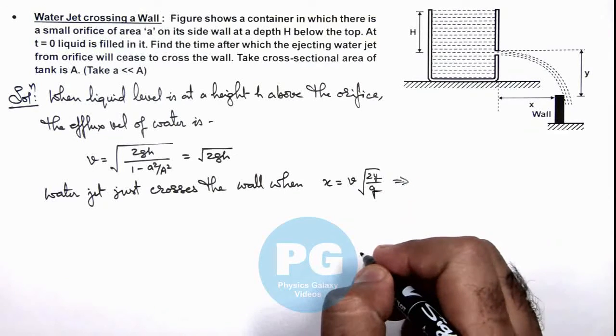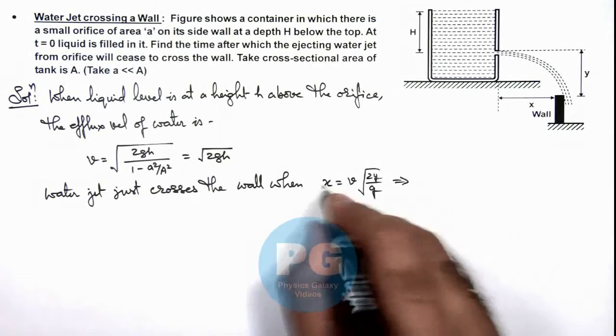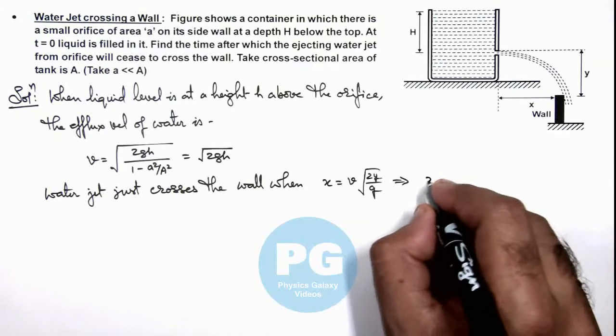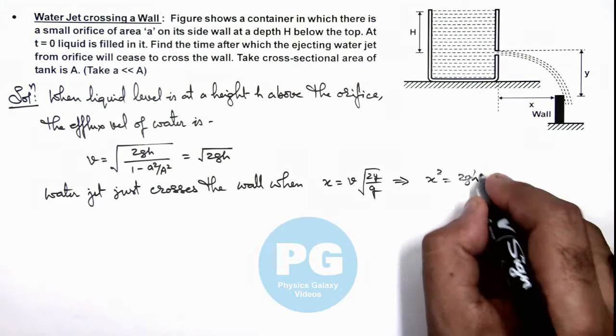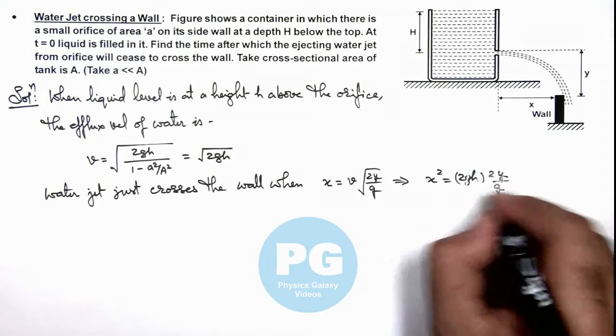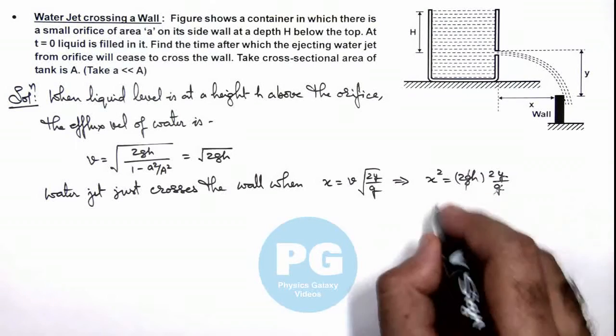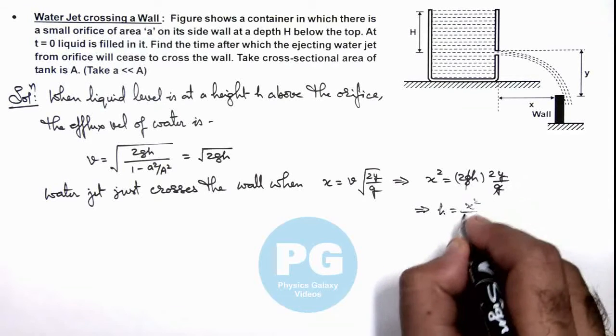This implies, in this situation if we substitute the value of v as root(2gh) and we square it, this gives us x² = 2gh × 2y/g. Here g gets cancelled out, and we get the value of h = x²/4y.